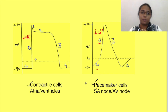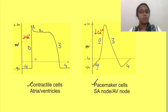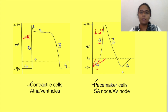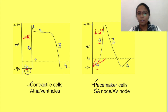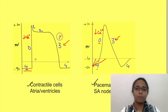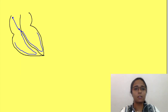Phase 4 of pacemaker cells slowly drifts towards threshold without any external stimulus, and its slope may be increased by sympathetic activity and decreased by parasympathetic activity, thus increasing or decreasing the number of impulses generated respectively. In contrast, phase 4 of contractile cells' action potential is constant. Phase 3 — the phase of repolarization — occurs due to exit of potassium in both contractile and pacemaker cells.